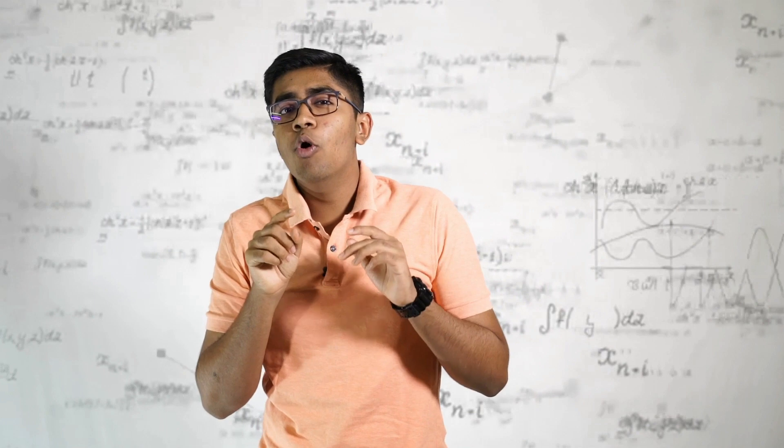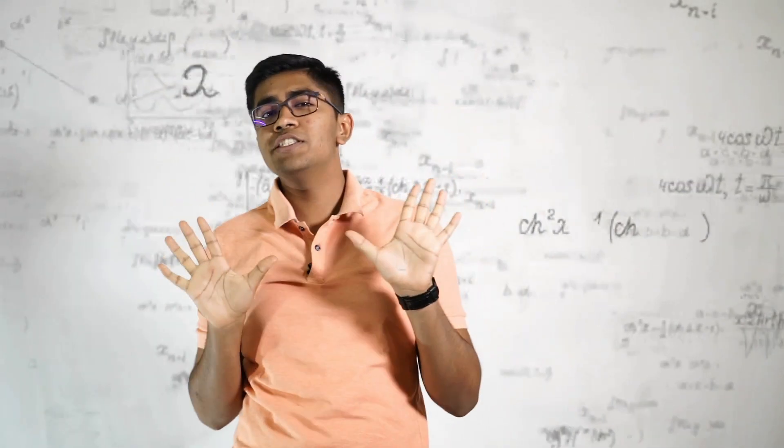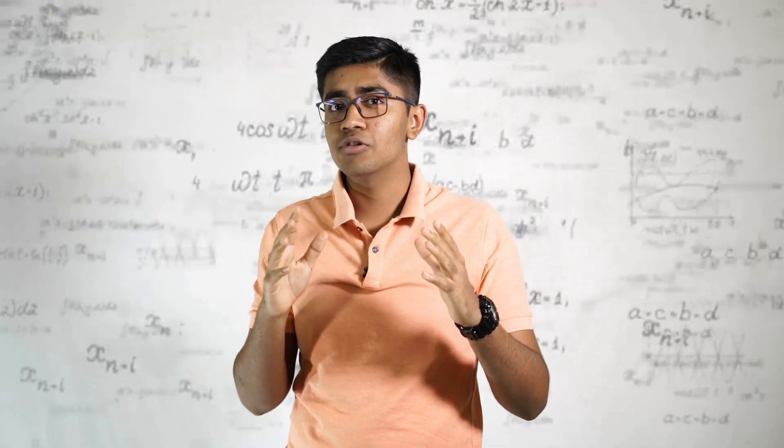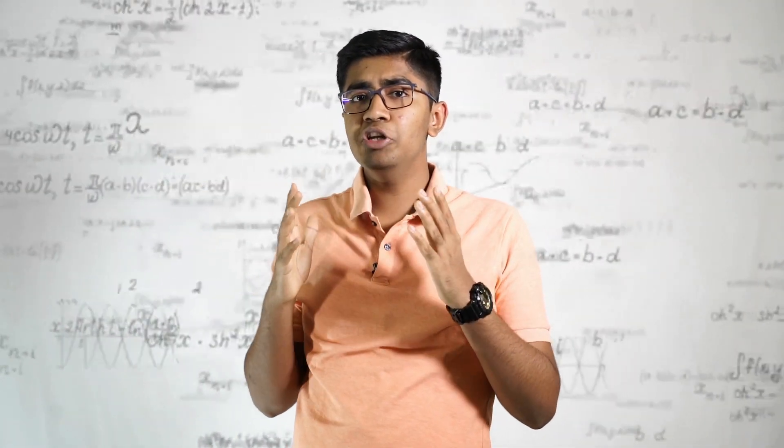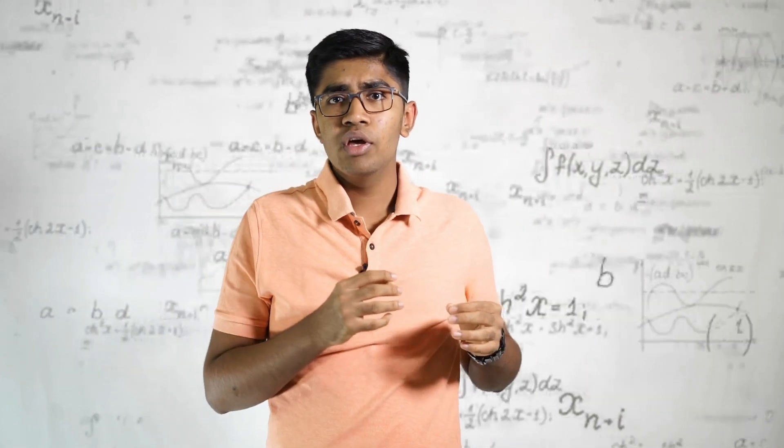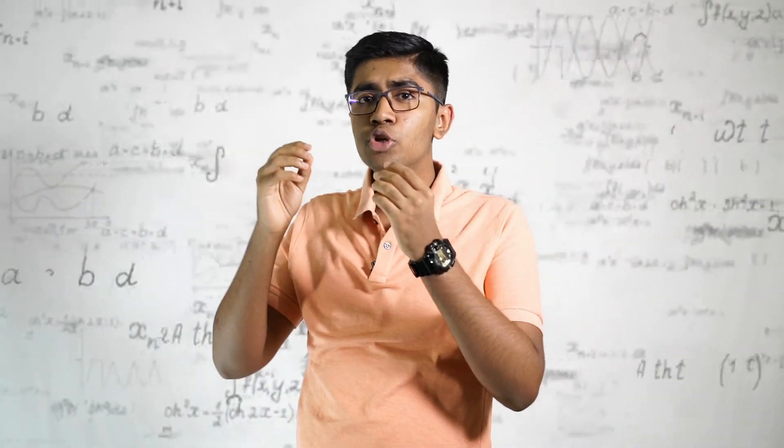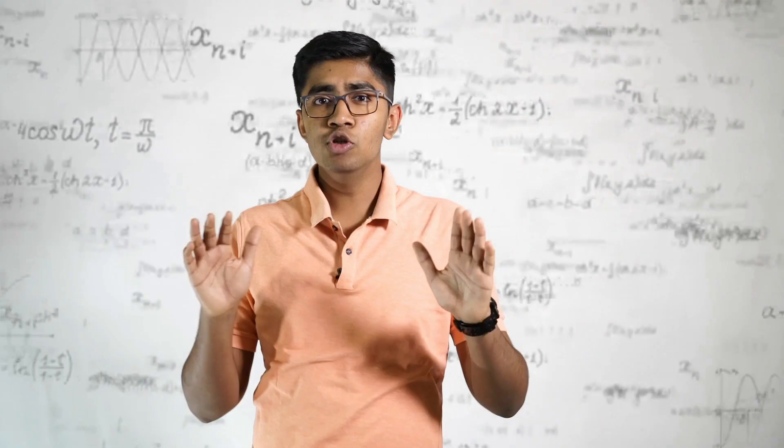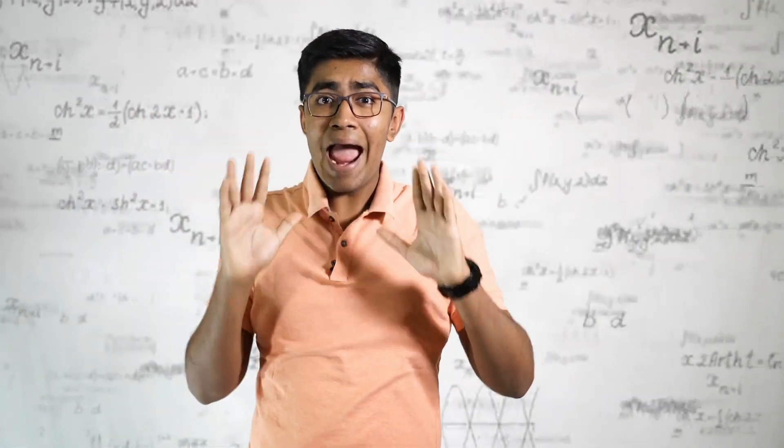Niels Bohr suggested that quantum particles exist in all states, not one. A concept called coherent superposition. By trying to observe and measure it, like in checking which slit the electron went through, we cause this coherent superposition to collapse, much like a house of cards. Turns out light acts both as a wave and a particle. Or none.